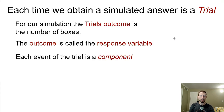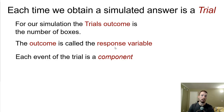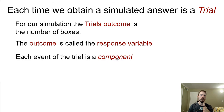Each time we obtain a simulated answer is called a trial. The length of our trial is how many boxes — or how many numbers — we had to go through until we got one of each kind. The trial's outcome is the number of boxes, which is the response variable — that's what we're graphing on the y-axis. Each event of a trial is a component; every time we look at another integer, that's the next component.